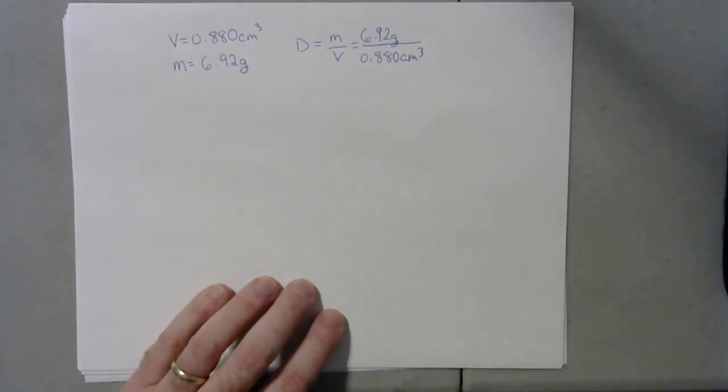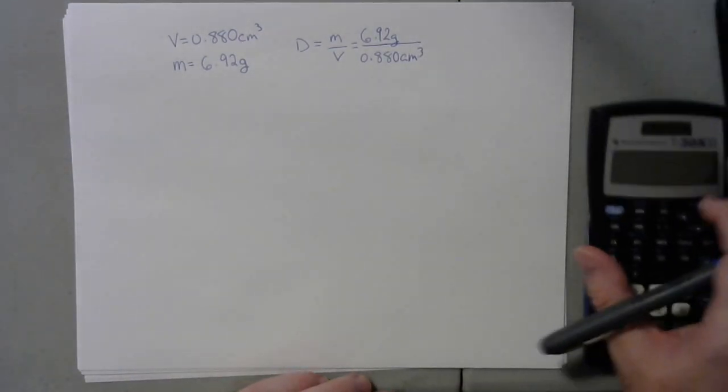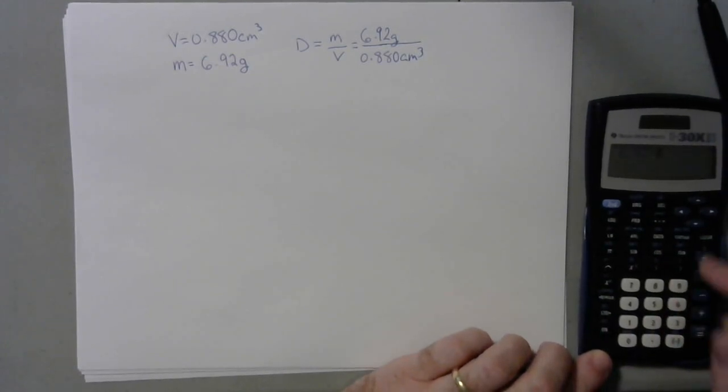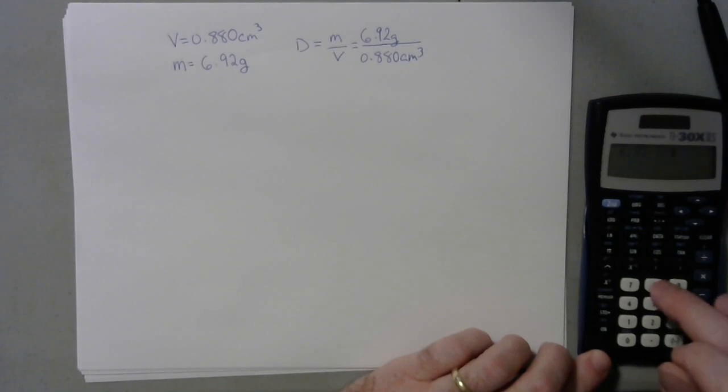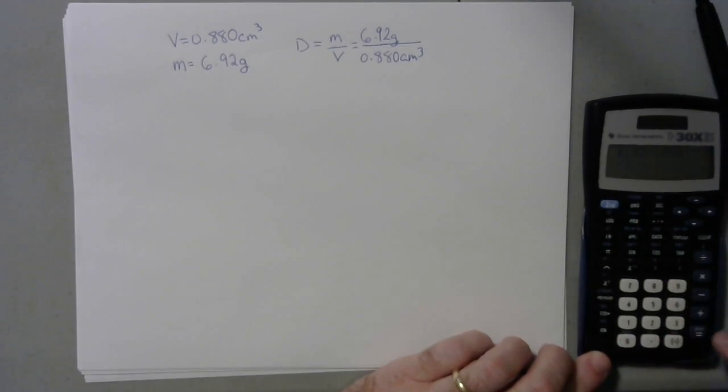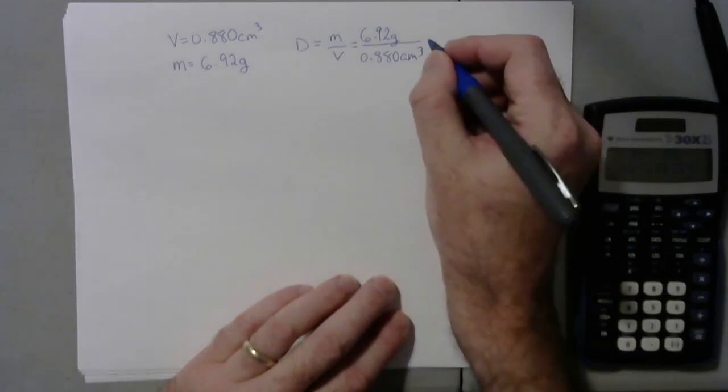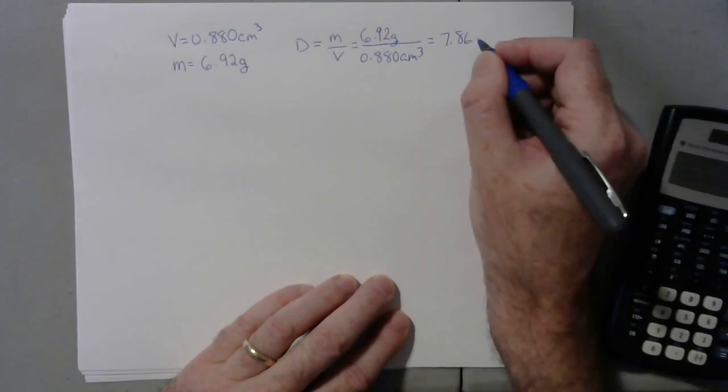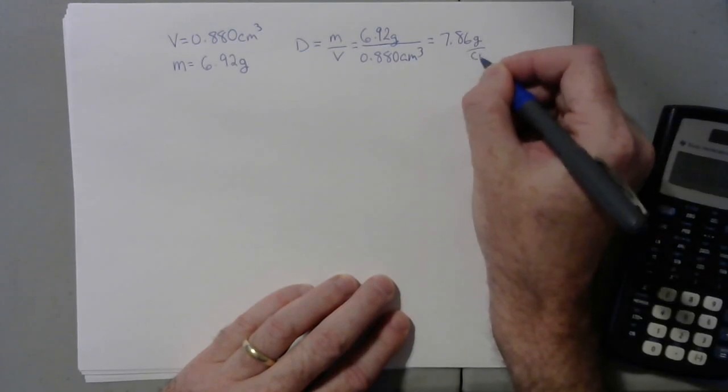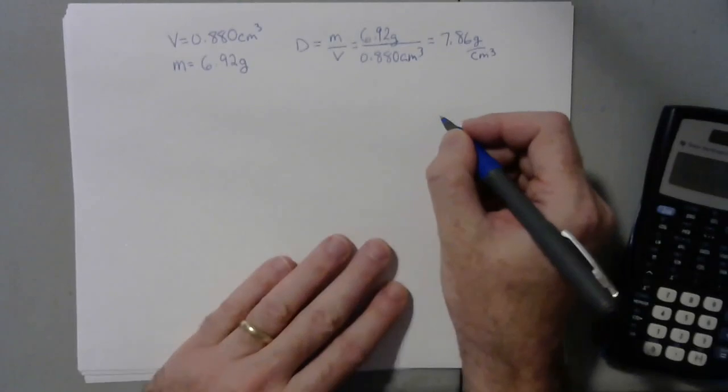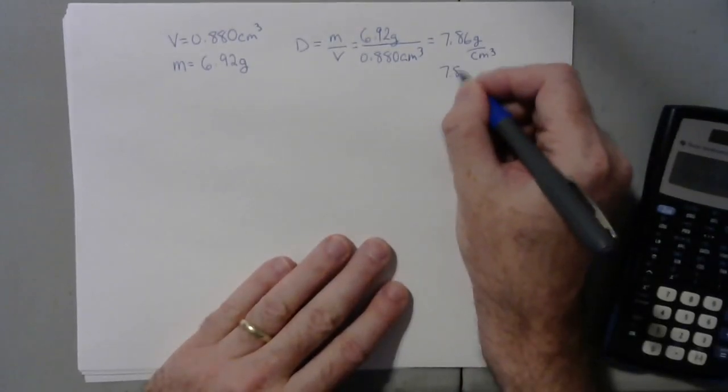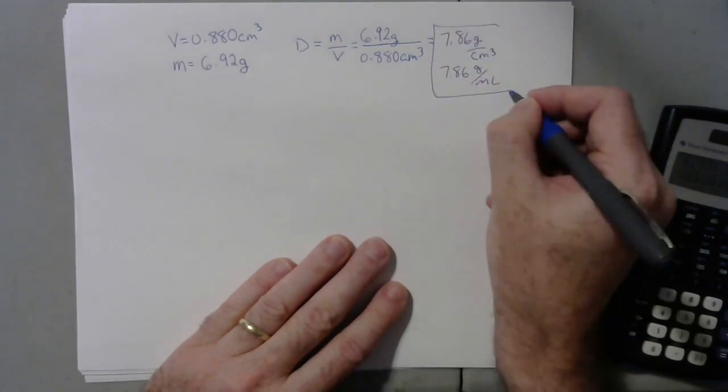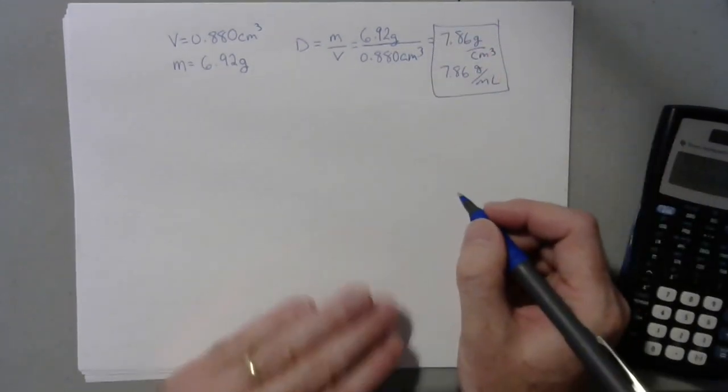And then what you're going to do is run that through your calculator. 6.92 divided by 0.880 and that's going to give you 7.86 grams per centimeter cubed. You could also say 7.86 grams per milliliter since the units really mean the same thing.